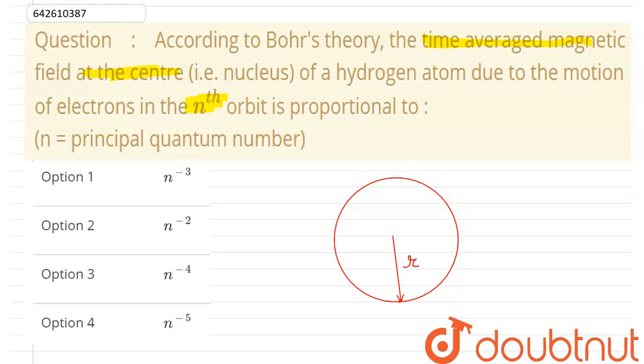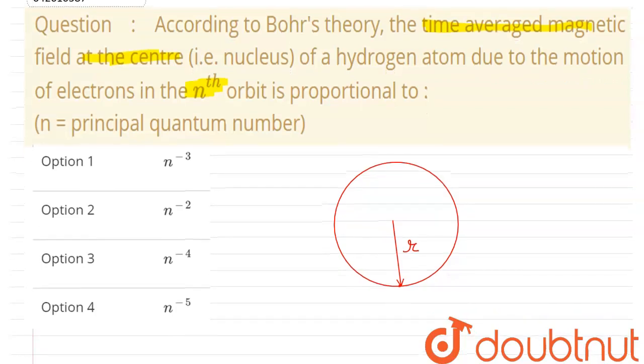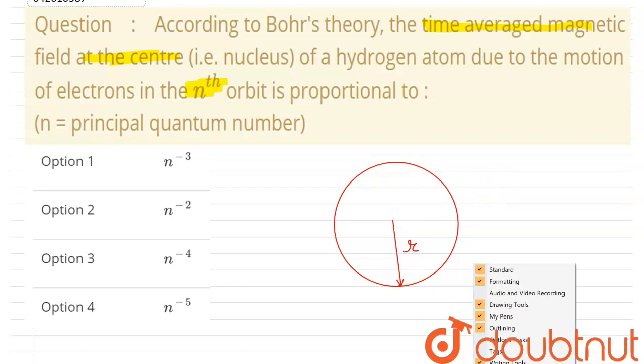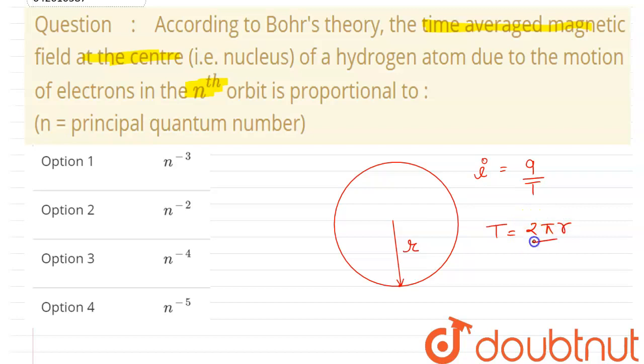What will be the current? We know that current is i = q/T, where T is the time period. So I will write the time period is T = 2πr/v. Simple. Just put the value of capital T here. So we'll get current induced is